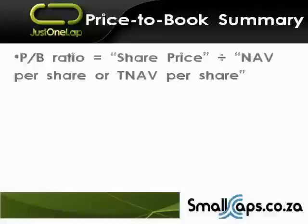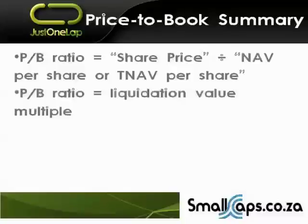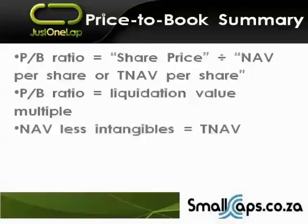Just summarizing what we looked at last webinar — we looked at the price-to-book. The P/B ratio, or the price-to-book ratio, is really the share price divided by the net asset value per share, or the share price divided by the tangible net asset value per share. The price-to-book ratio is really looking at the liquidation value multiple — how much higher or lower than the theoretical liquidation value of the company are you buying it on?